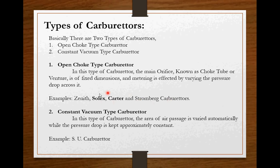In this video, we will study regarding Solex carburetor whereas Carter carburetor will be discussed in next video. The second type of carburetor is constant vacuum type carburetor. In this type, the area of air passage is varied automatically while the pressure drop is kept approximately constant. The example of this type of carburetor is SU carburetor which will also be discussed in coming videos.